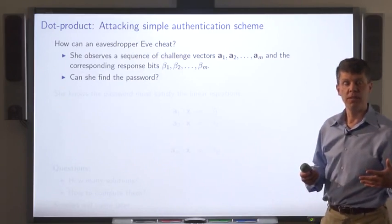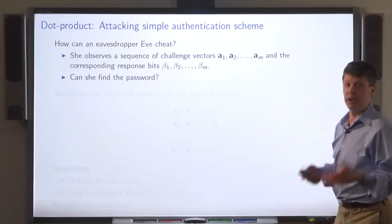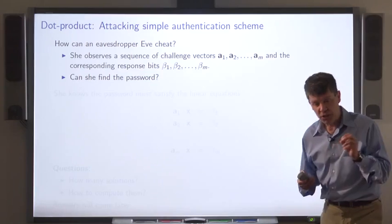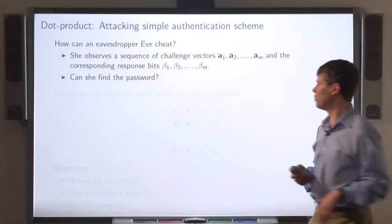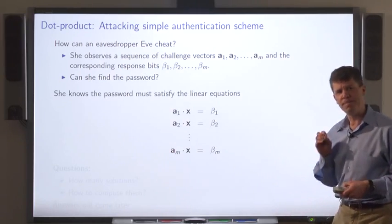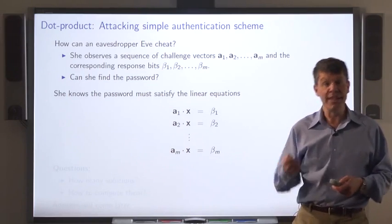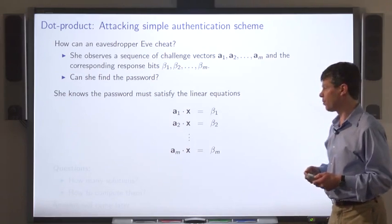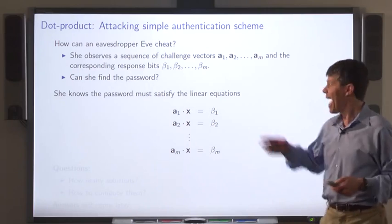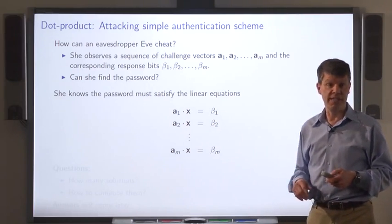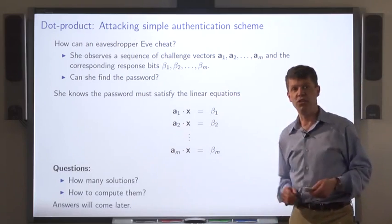This is repeated several times. Now, how can an eavesdropper cheat? Let's say she observes a sequence of challenges A1, A2, A3, and so on, and she observes the human's corresponding responses beta 1, beta 2, and so on. Can she use these to find the password? She knows that the password must satisfy these equations. So if she can solve this set of equations, can she find the password? There are two questions: maybe this set of equations isn't enough to precisely pin down the true password, so how many solutions are there to this system of linear equations, and how could you even compute them? We'll study these questions later.